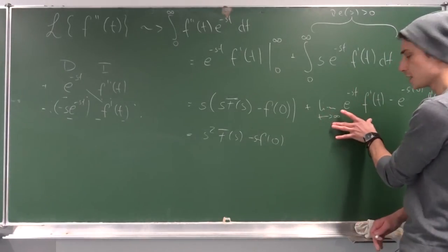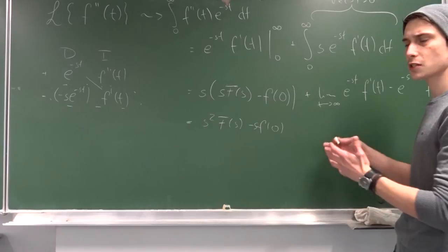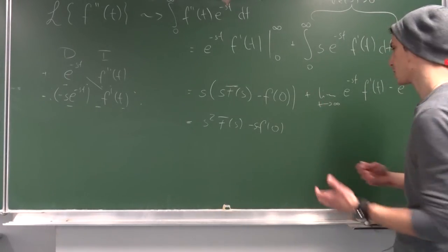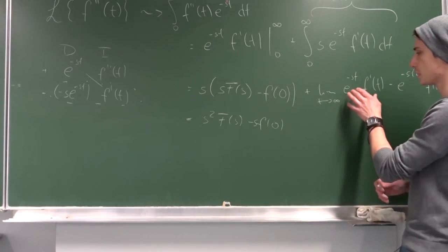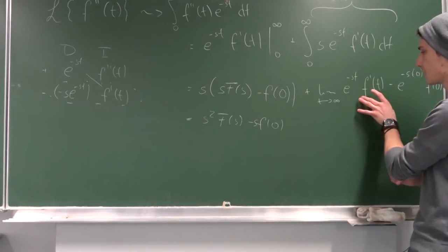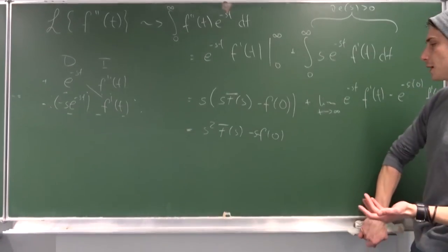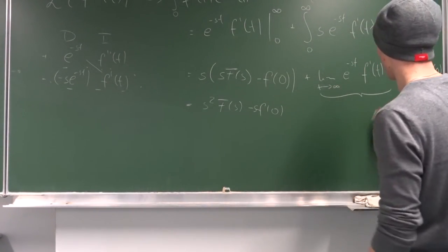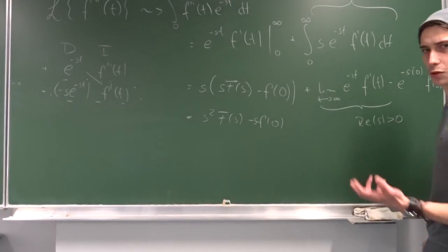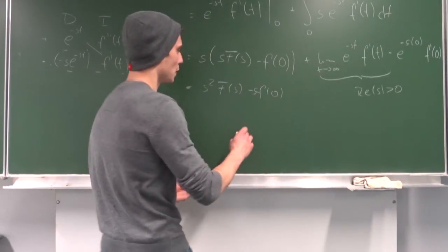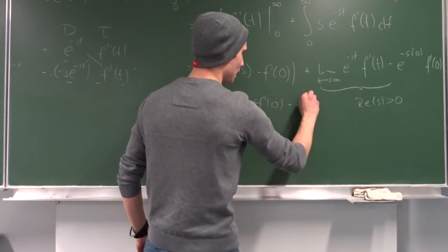Let's check if this condition also holds for the boundary term to converge. If the real part of s is greater than zero, then e to the minus infinity is one over infinity, which is just zero, so this whole thing converges. As before, without any restrictions, we assume the exponential decays way faster than f(t) or f'(t). So this whole thing converges for the real part of s greater than zero. For the lower bound, e to the minus zero is just one, so we get minus f'(0). Therefore, the Laplace transform of the second derivative is s squared F(s) minus s·f(0) minus f'(0).